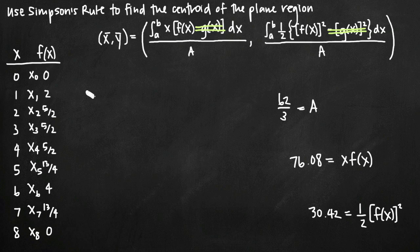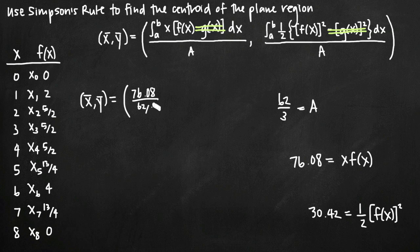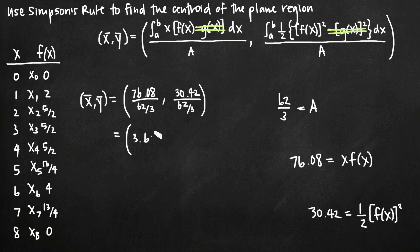Now that we have all three values, finding the centroid is straightforward. We plug in: x̄ = 76.08 ÷ (62/3), and ȳ = 30.42 ÷ (62/3). Doing the math on a calculator, we get x̄ ≈ 3.68 and ȳ ≈ 1.47. So the centroid coordinate point is approximately (3.68, 1.47). That's how you use Simpson's rule approximation to find the centroid of the plane region.